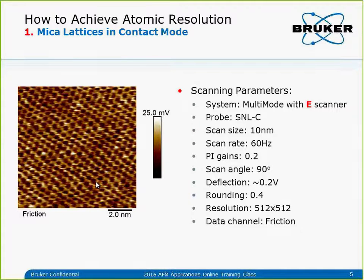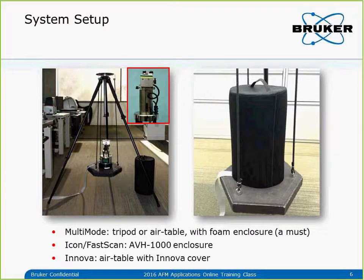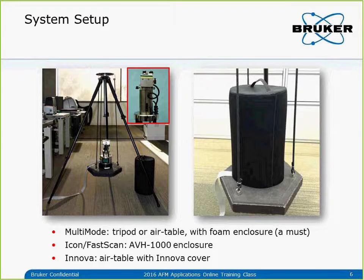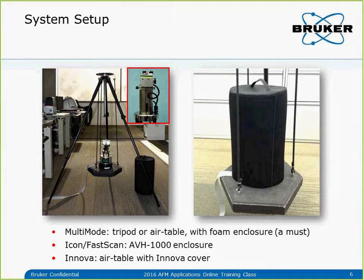Now let's go through the detail step-by-step. First we need to choose the system. ICON, FastScan, Innova, and the multimode are all capable of atomic resolution imaging. For the multimode, we need to choose the E-scanner or the A-scanner. The J-scanner is not capable — it's a good scanner, but it's not designed for this application.